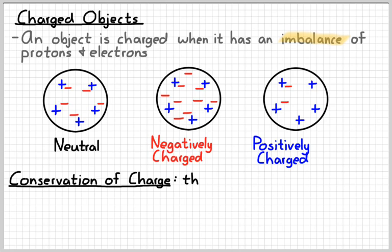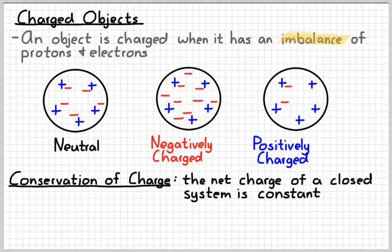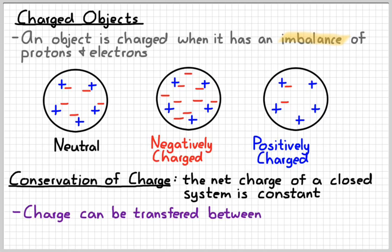Like a lot of things we've learned about, charge is something that is conserved. The net charge of a system, if it's closed, will remain constant. So it's not that you can't lose or gain charge, it's that the total in a system has to be constant. So you can transfer charge from one object to another, or from one system to another, depending on how you look at it, but charge must be conserved.